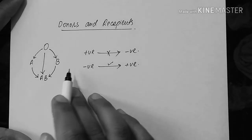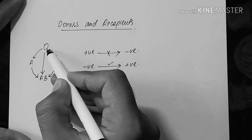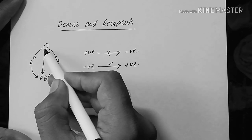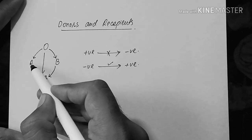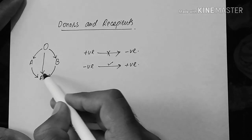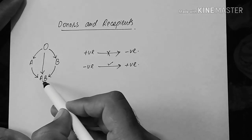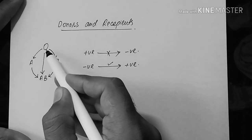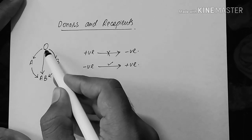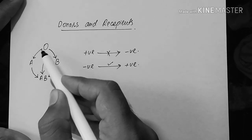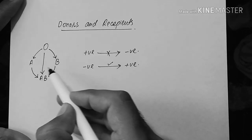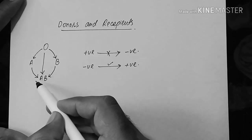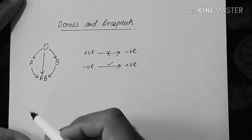O positive can donate only to O positive, A positive, B positive, and AB positive. But O negative can be donated to O negative, O positive, A negative, A positive, B negative, B positive, AB negative, and AB positive — making O negative the universal donor.